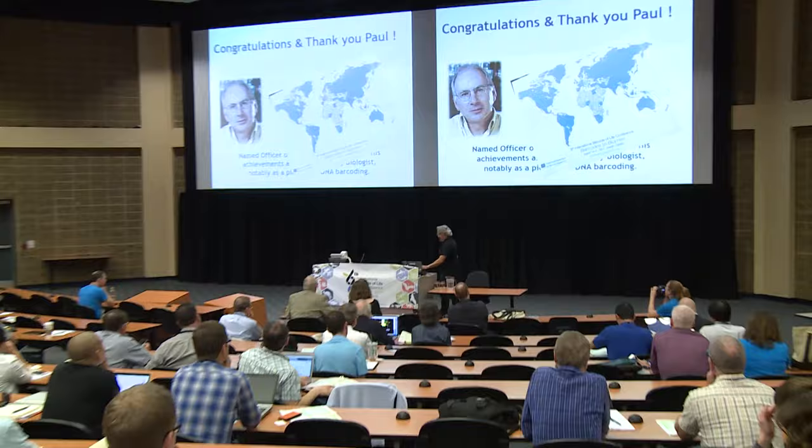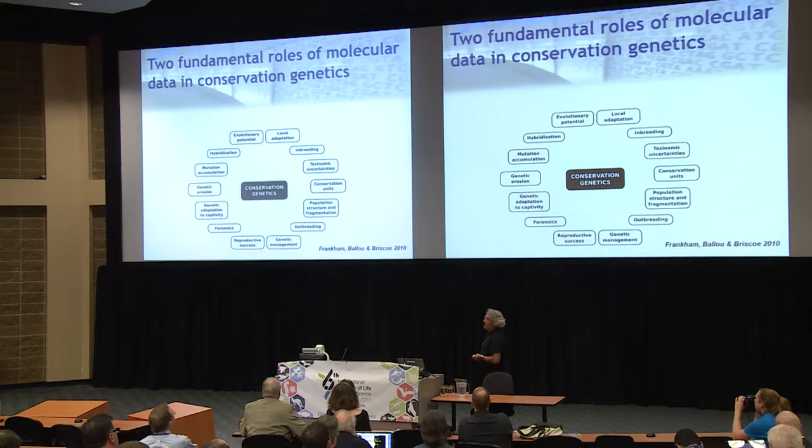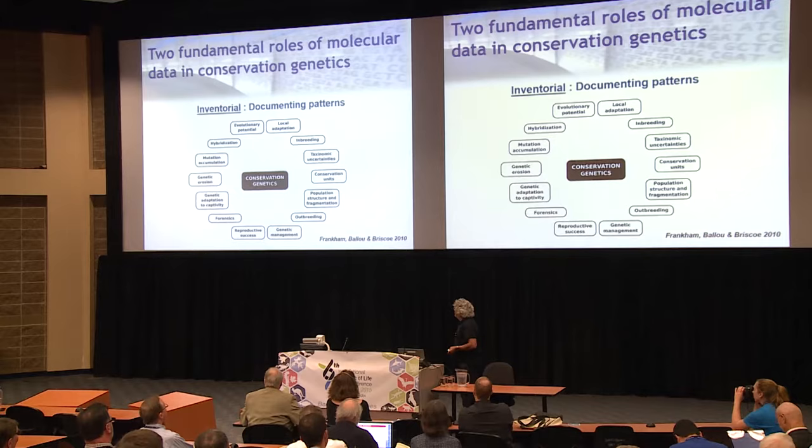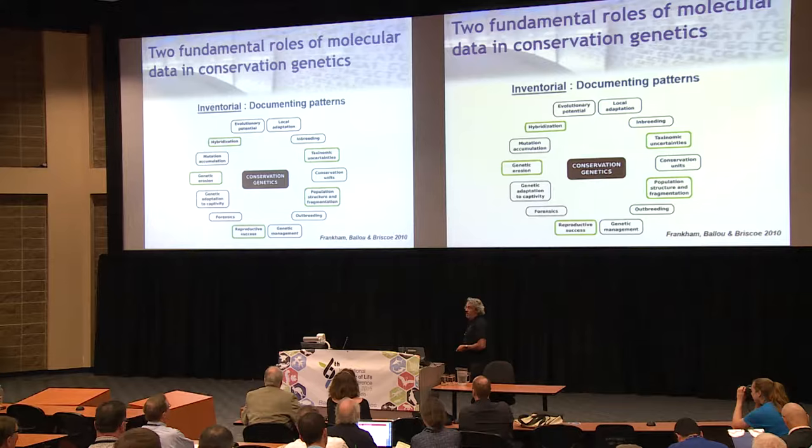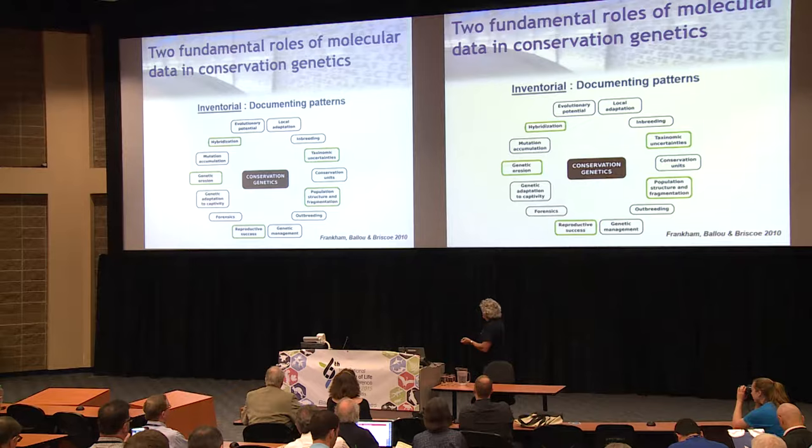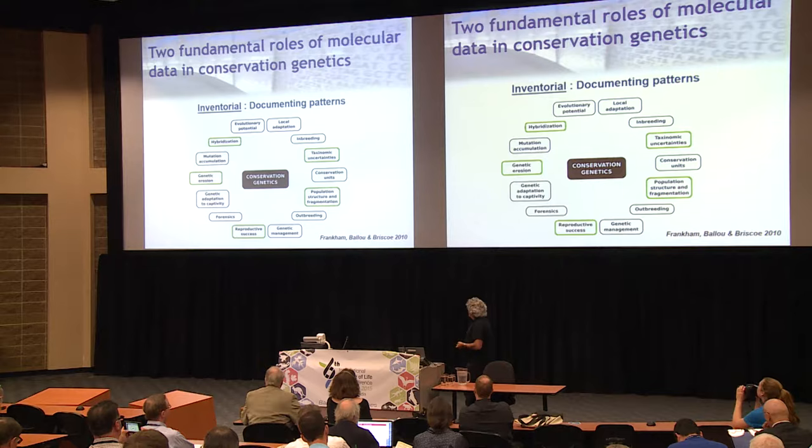So there are really two fundamental roles for molecular data in conservation genetics. The first one, we can refer to it as inventorial, which is about documenting patterns. This is really what we have been doing for many years using more traditional methods — things like taxonomic uncertainties, classic population structure, documenting patterns of hybridization, and so on.